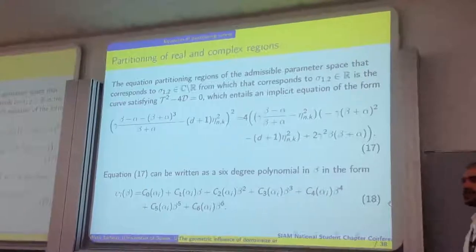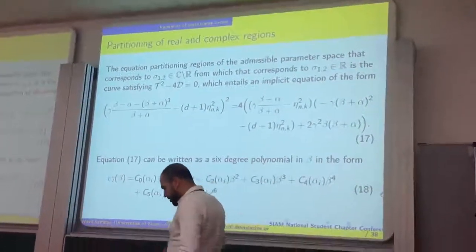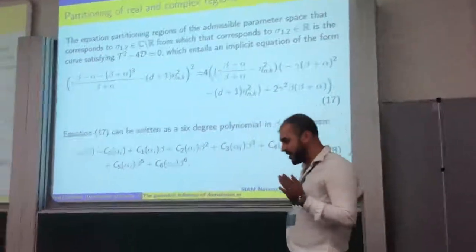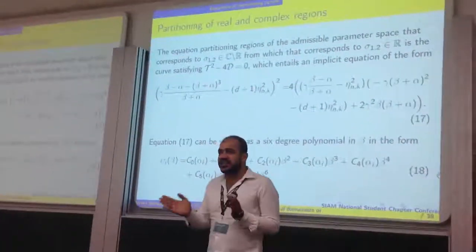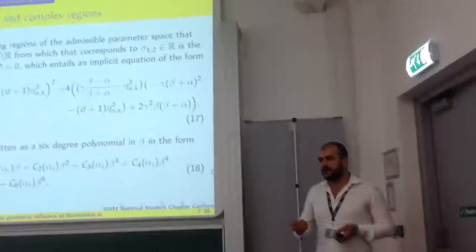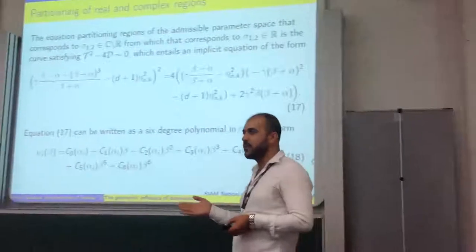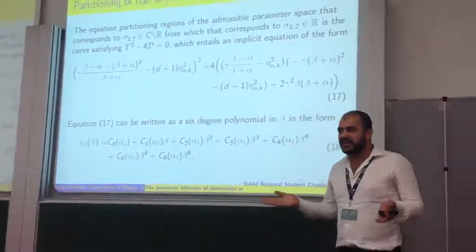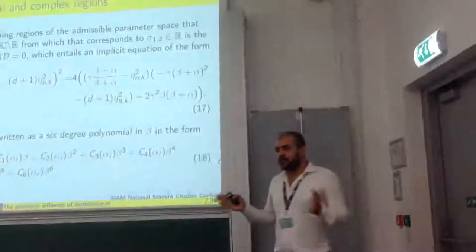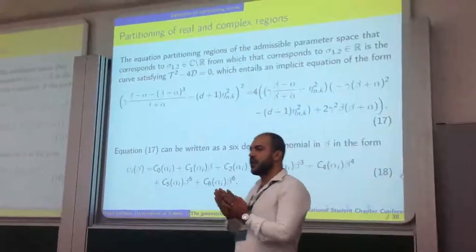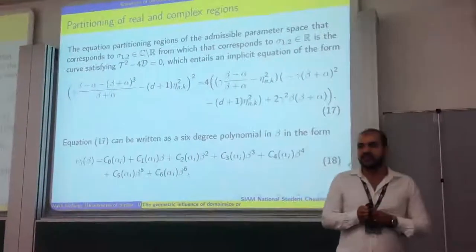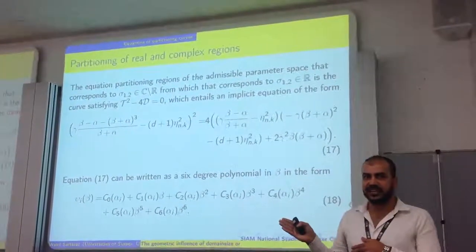I want to show the partitioning curves on the bifurcation parameters — how we partition the space. This completely classifies the whole parameter space without any stochastic noise, in the deterministic case. There are two partitioning curves. For the 2x2 system, we have one case where all roots are real or all roots are complex — that partition is given by the discriminant being zero in the characteristic polynomial, which is T-squared minus 4D. The other case is when T-squared minus 4D is negative and the real part is positive or zero, which gives limit-cycle behavior.